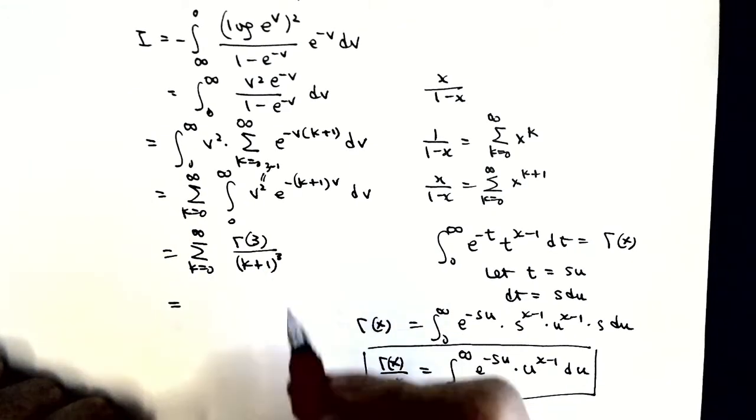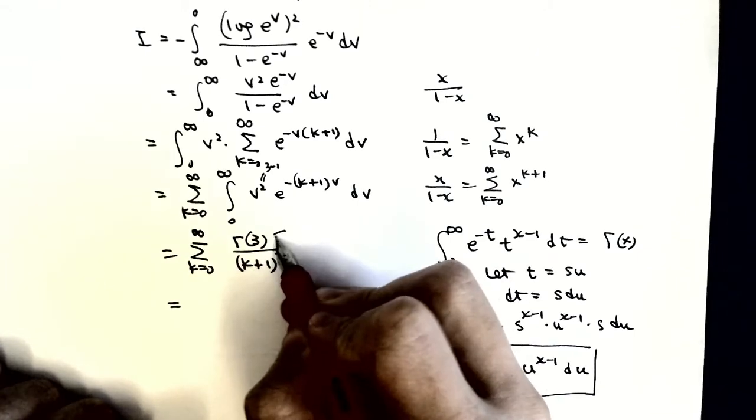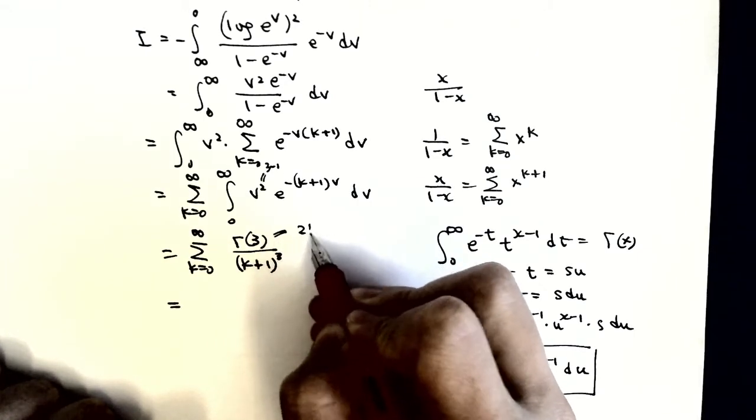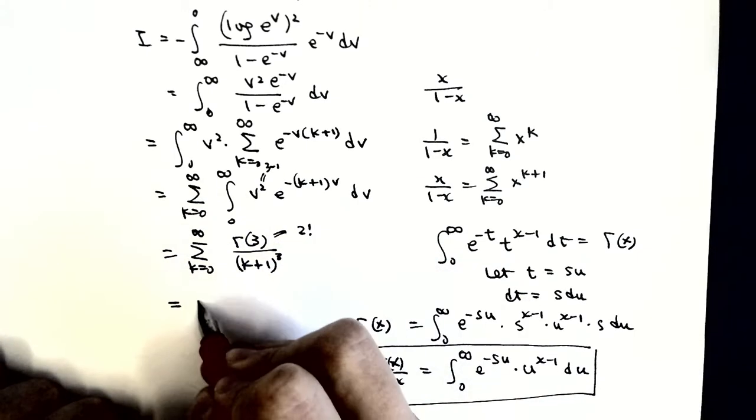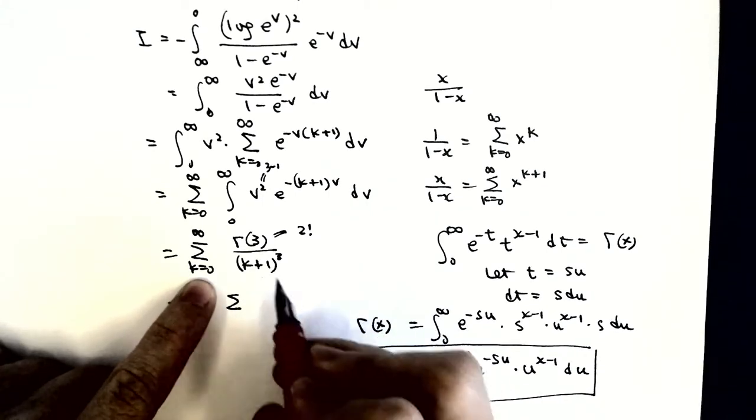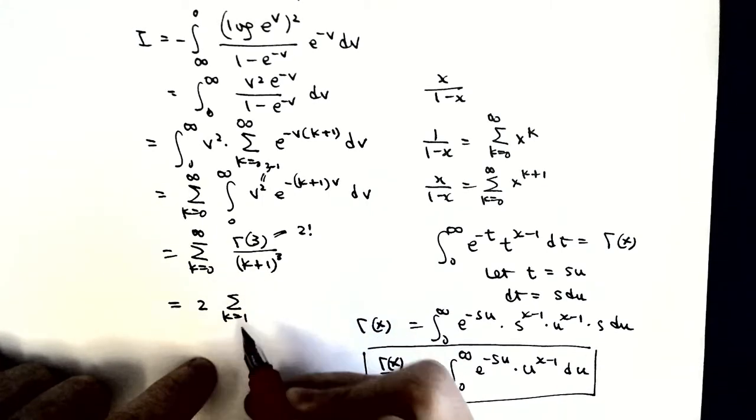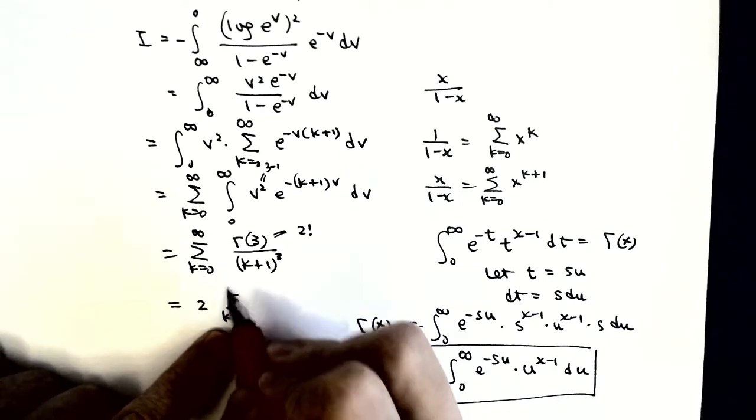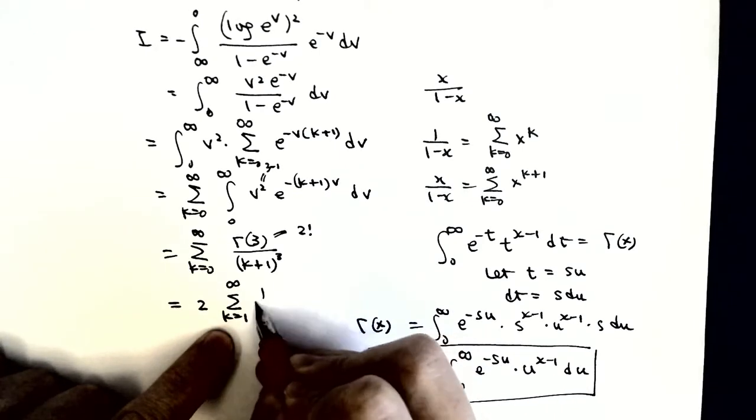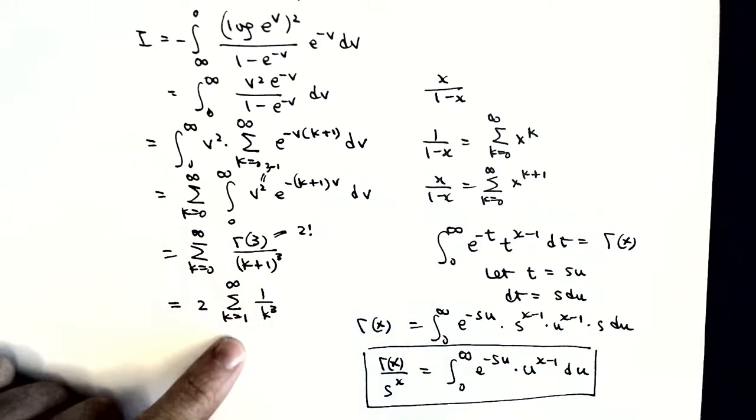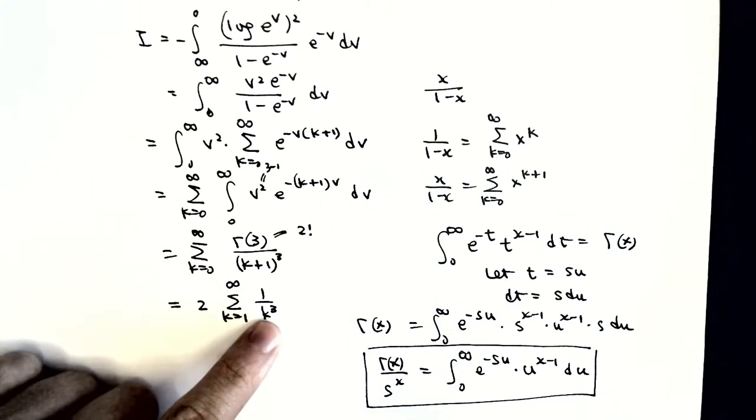Now we know gamma of 3 is just 2 factorial, which is 2. And then, when k starts from 0, k plus 1, we can switch the index to start from 1, and then have 1 over k cubed. This is just the zeta function of 3, zeta(3).